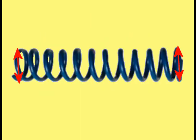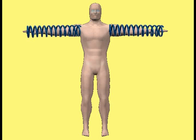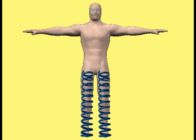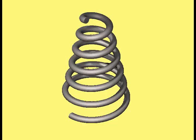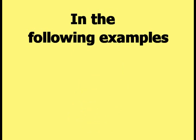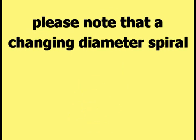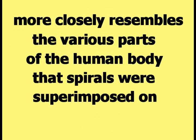Uniform diameter three-dimensional spirals were used to demonstrate how a spiral could influence various parts of the body. A different way that a three-dimensional spiral could influence the movement of the human body would be to replace the uniform diameter spiral with a spiral that has a changing diameter. In the following examples, note that a changing diameter spiral more closely resembles the various parts of the human body that spirals were superimposed on.